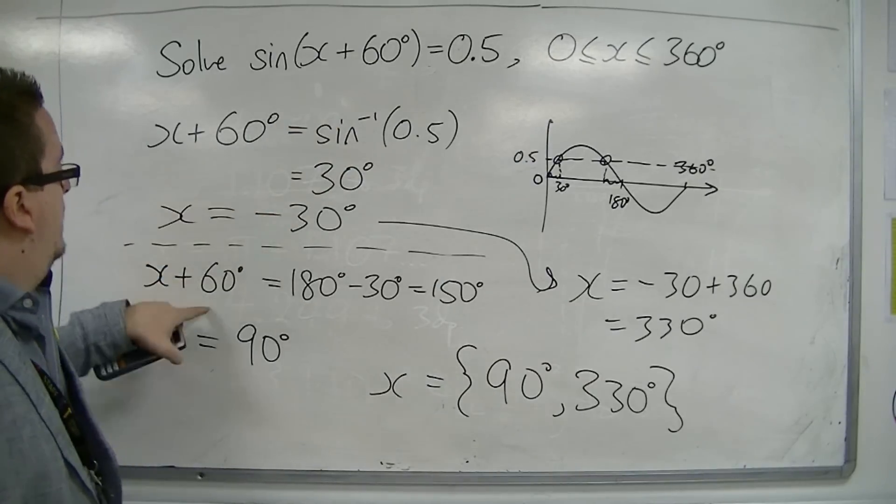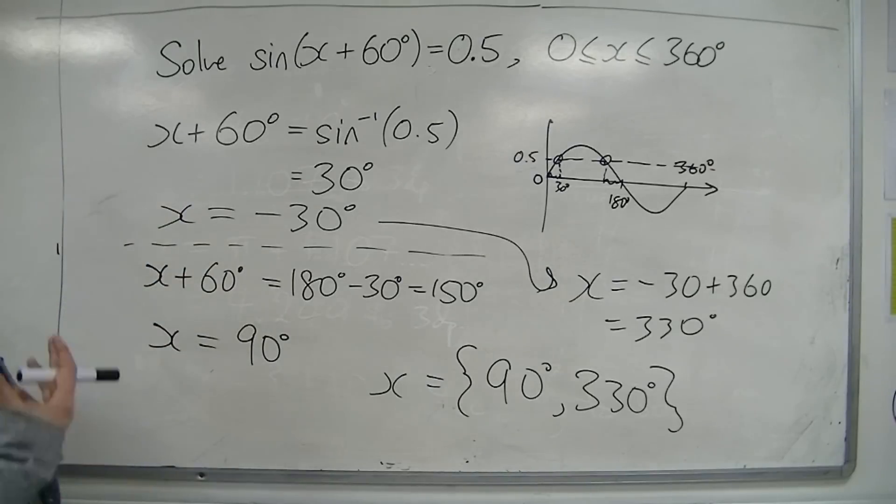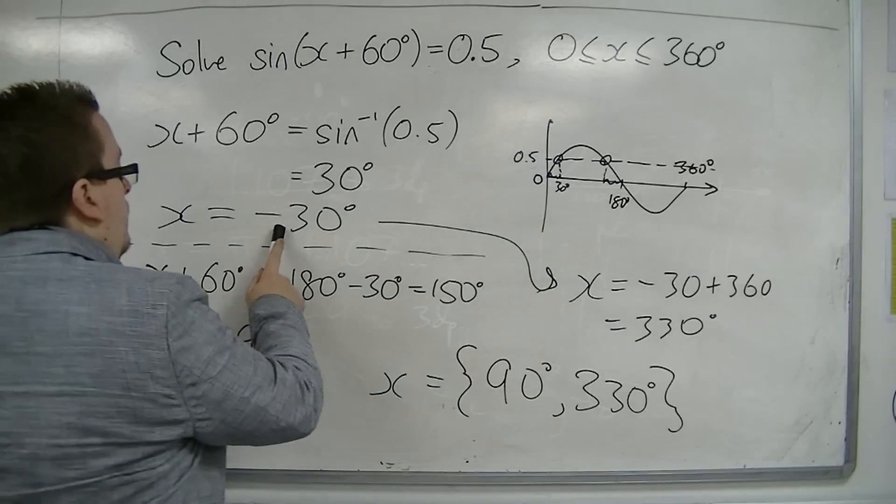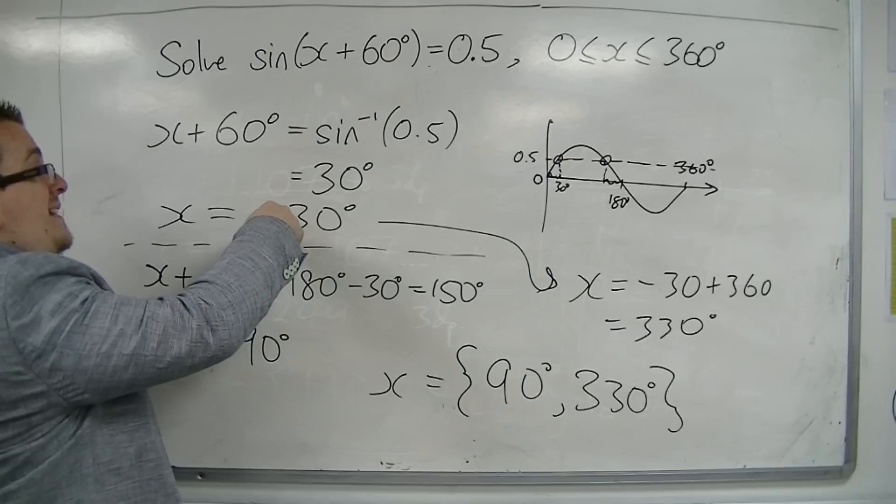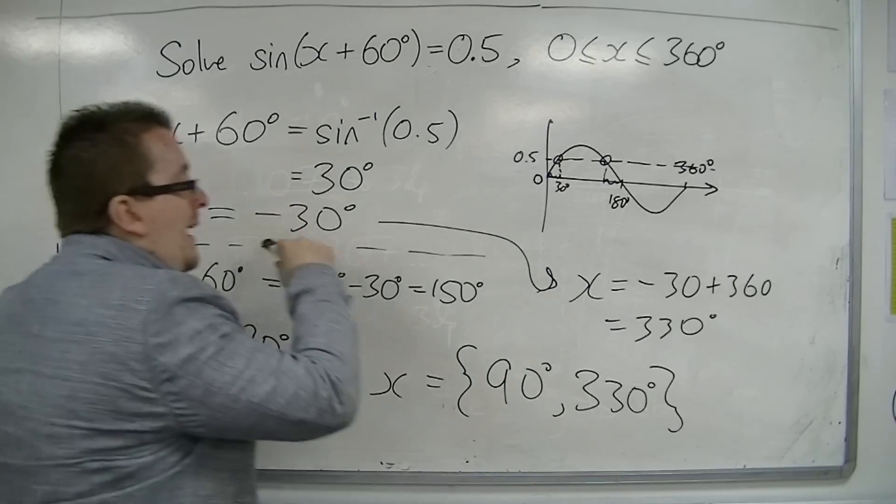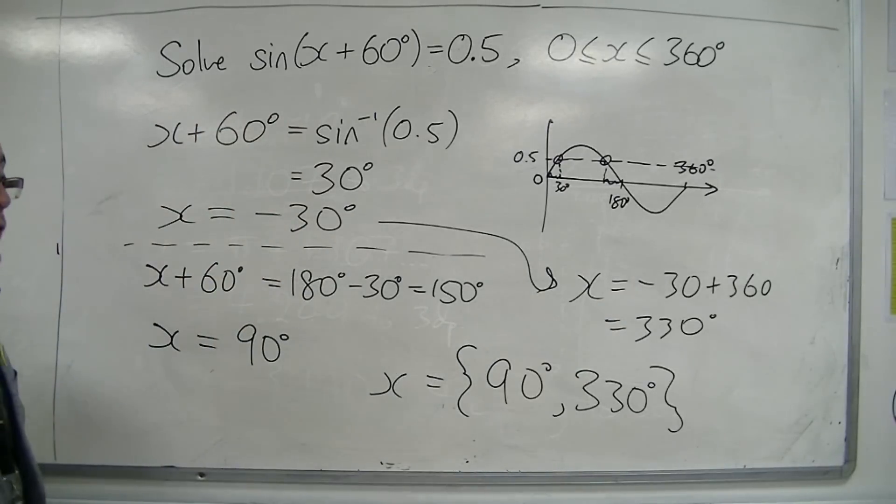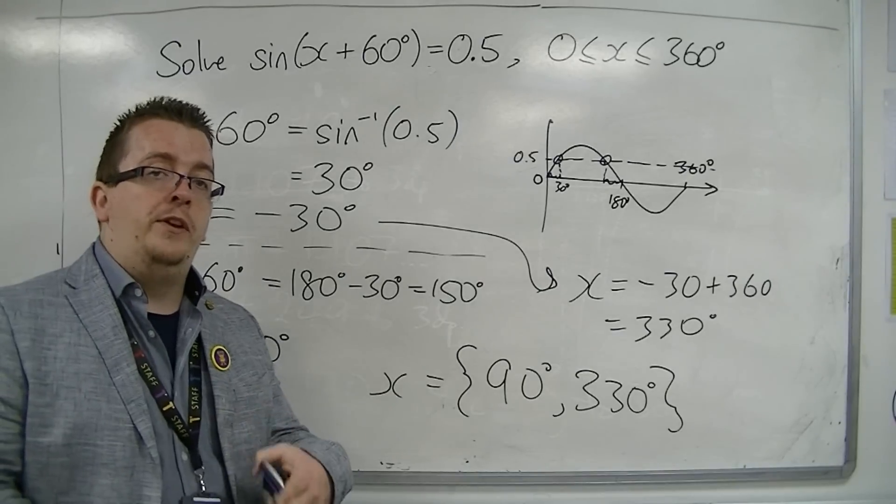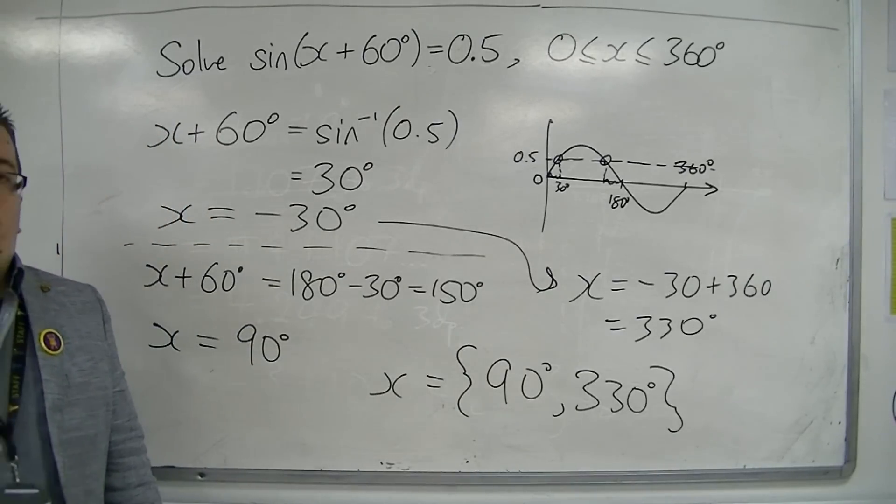sketch sine and find the two solutions as if all I'm doing is solving sine x equals 0.5. I then apply the transformation by, in this case, taking 60 from both sides and then identifying that one is outside of the region and adding the period to it. So I'm going to use similar processes in the next few videos to solve these more tricky examples.